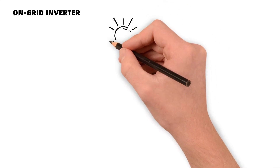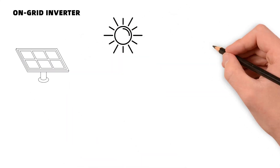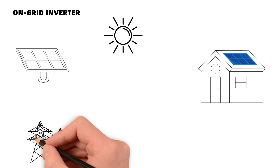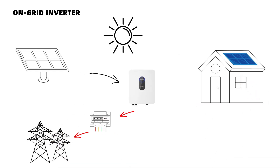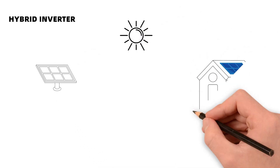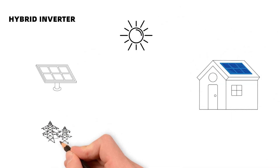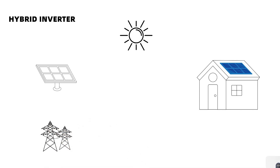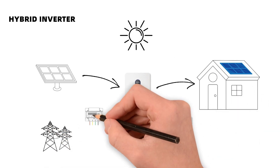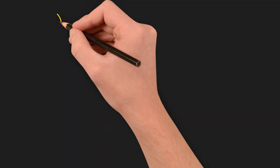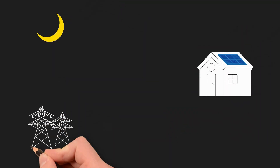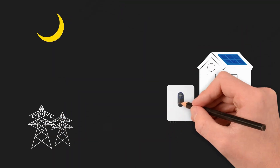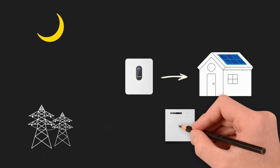An on-grid inverter converts the electricity generated by solar panels into AC power and connects it to the grid. Users can sell surplus electricity to the grid. A hybrid inverter is an intelligent device capable of connecting solar power, batteries and the grid simultaneously. It enables households to automatically switch energy sources as needed, facilitating flexible energy management to reduce energy costs and improve energy utilisation efficiency.